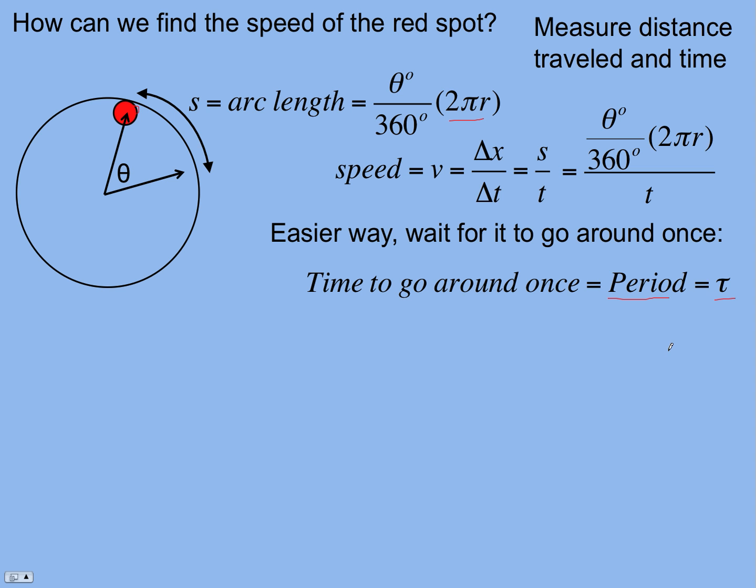The symbol is the Greek letter tau. The speed then, change in distance over change in time, now the change in distance is just the circumference. And it's over the time, which we're now calling the period. So you get 2πr over tau, over the period.